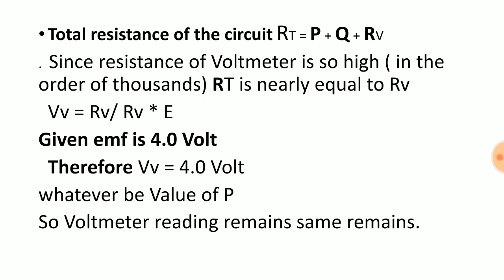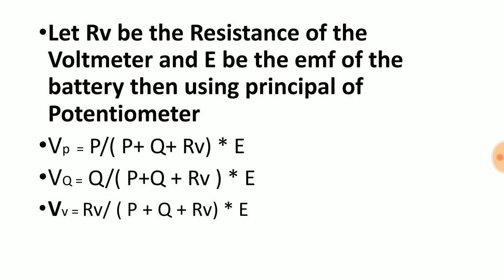So total resistance can be Rv. If in this third formula, Rv is already in the numerator, and if P and Q are negligible, then the denominator will also be Rv.